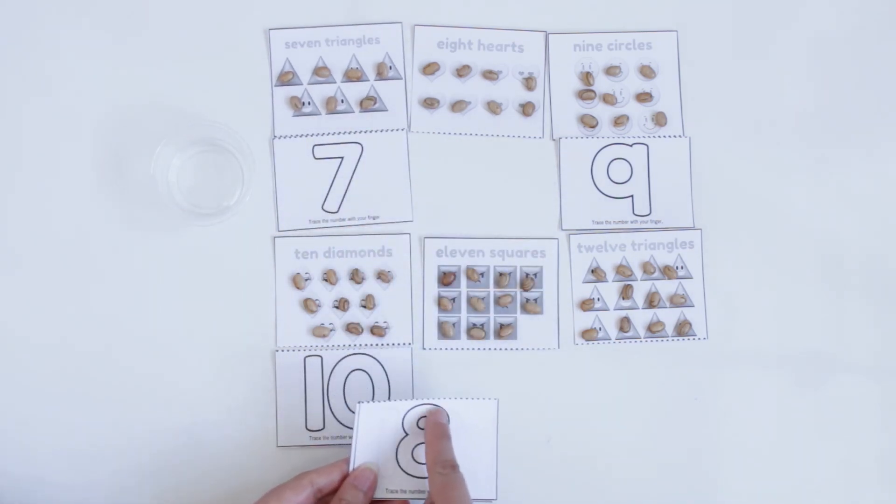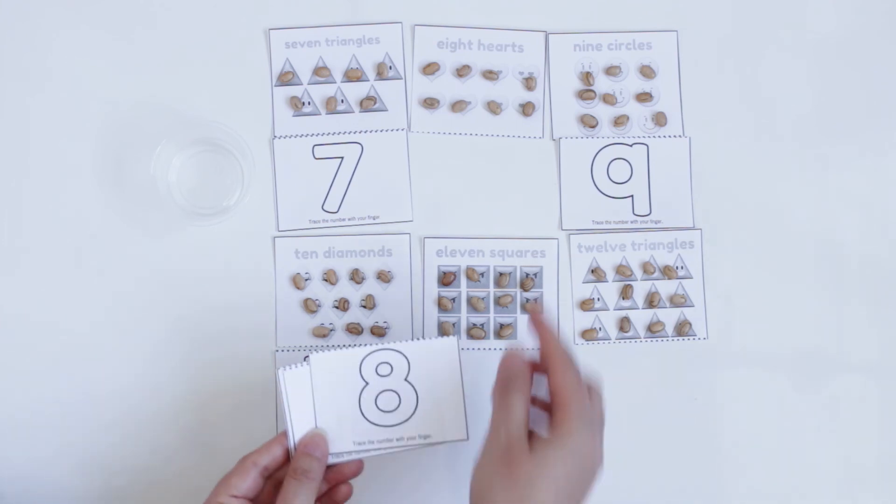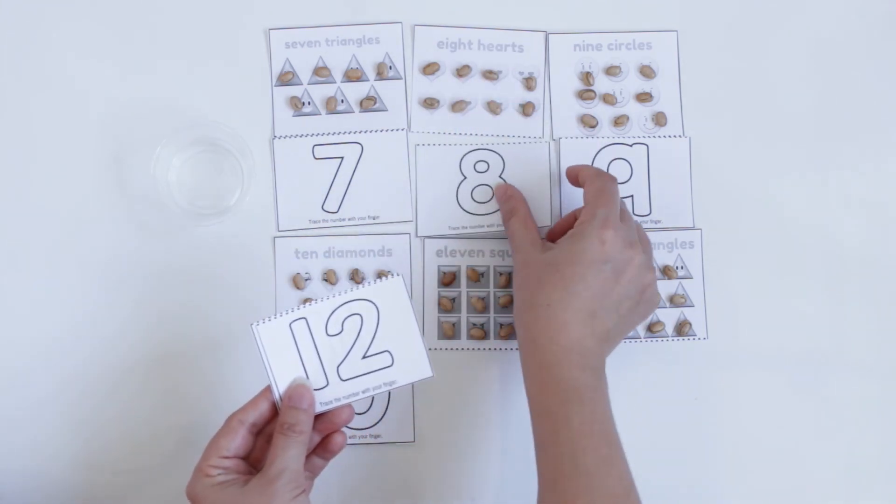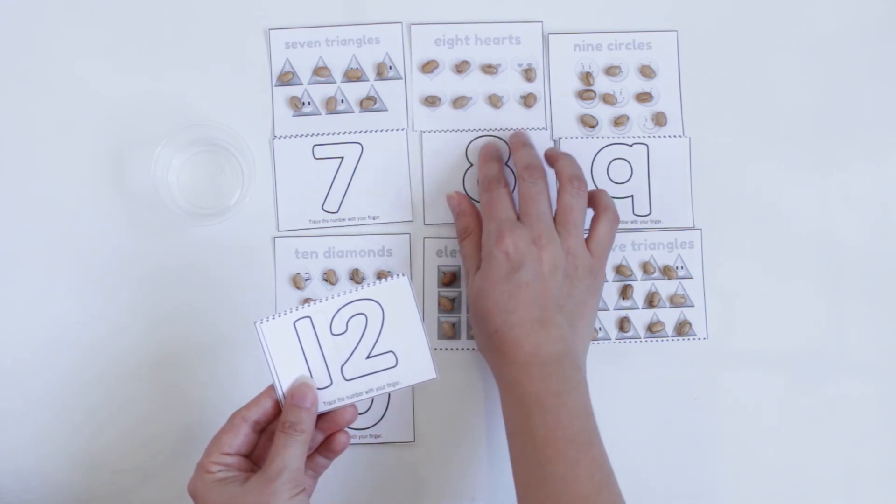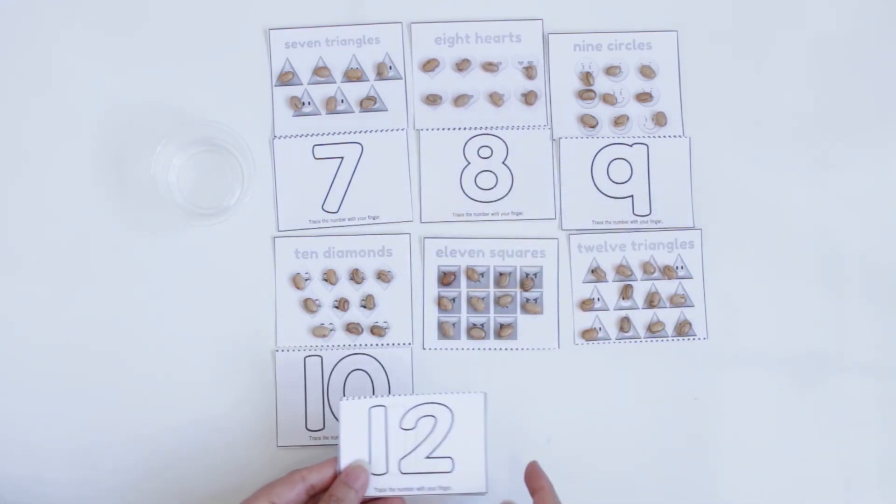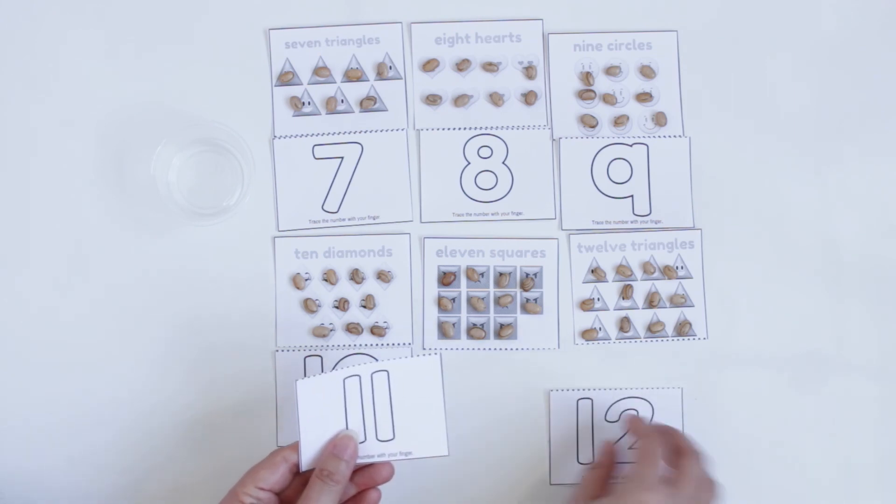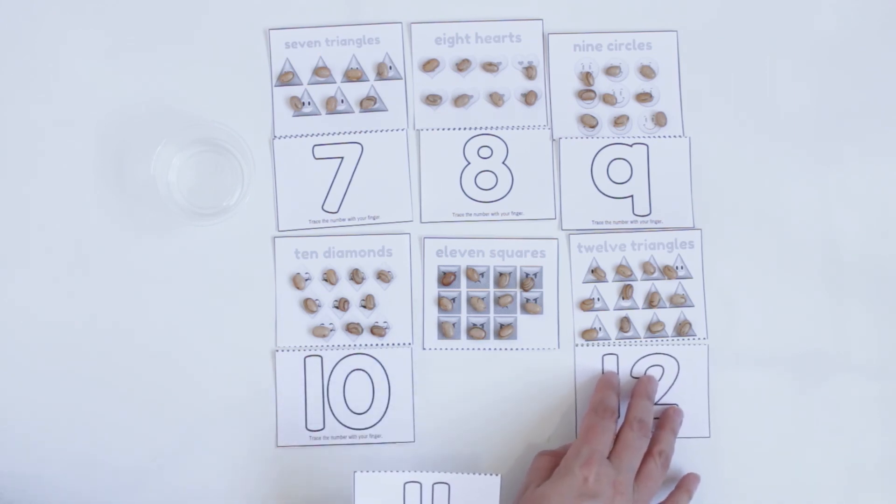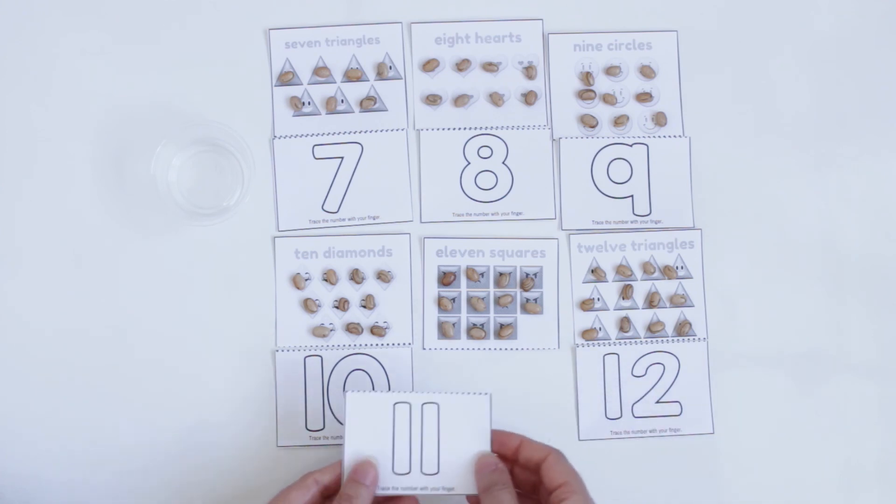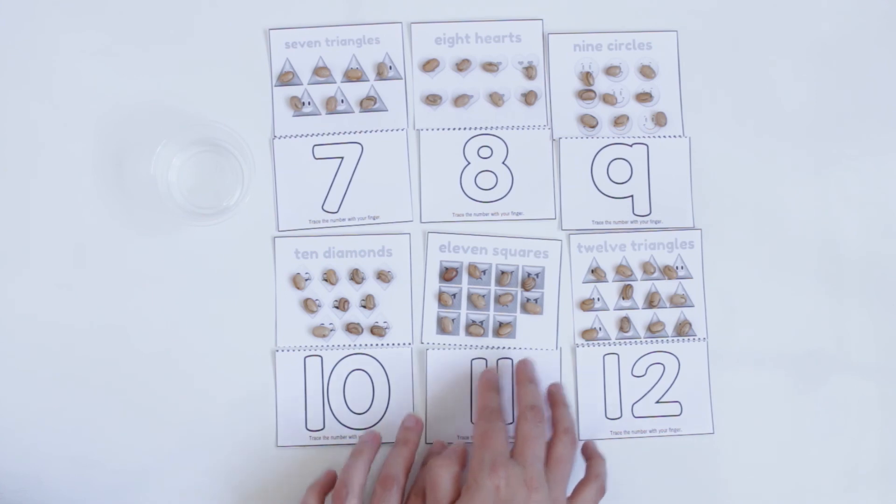8. So, 8. Where do I have 8? 8 hearts. 12. Here, 12. So trace. 12 triangles. And 11. 11 squares.